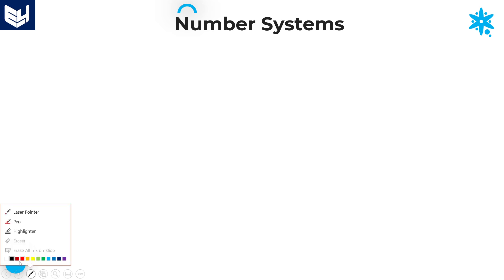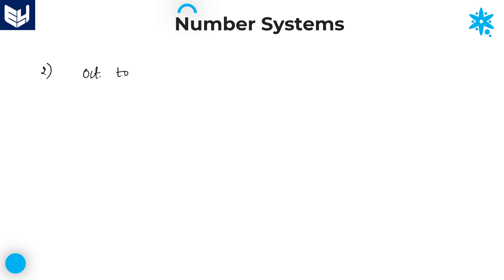The second conversion is octal to decimal. How to convert any octal number system into decimal number system? Let us take a small example: 248 base 8. Base 8 indicates that this is the octal number system.